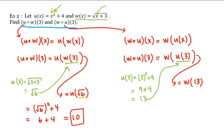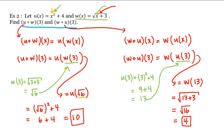To evaluate w at 13, we plug 13 in wherever we see an x: this is equal to the square root of 13 plus 3, which is equal to the square root of 16, which is 4. So this is the second value we were looking for.